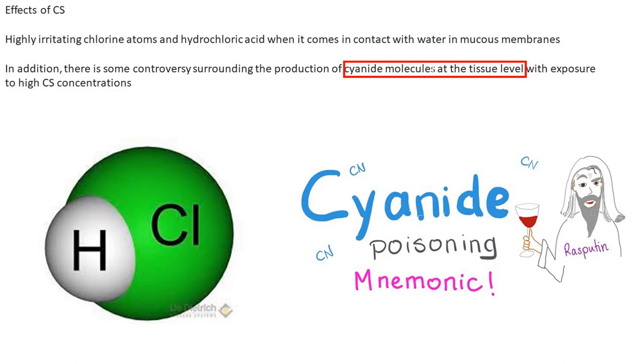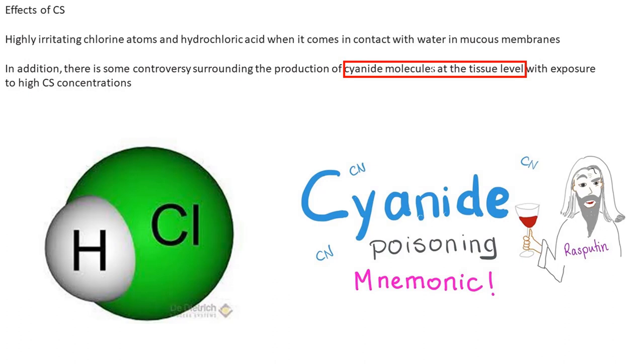Once dissolved, the particles produce hydrochloric acid in the tissues. Even in laboratories we handle hydrochloric acid very carefully, because once it contacts your skin it causes trouble. Here it is built in situ within your tissues, causing irritations, a burning sensation, and increased tear production.